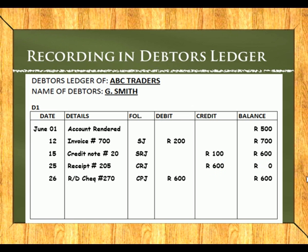Dishonored checks, found in the cash payments journal or bank statement, go to the debit side to increase the balance again. If we charge interest or any other transaction that does not fit the above categories, it goes into the general journal using the general voucher number. In this example, interest of 10% — R60 — is charged, increasing the balance to R660. If it were a bad debt being written off, the transaction would go to the credit side.